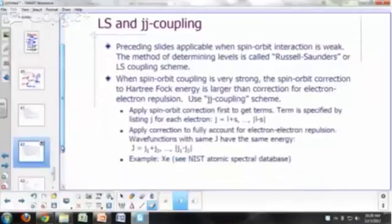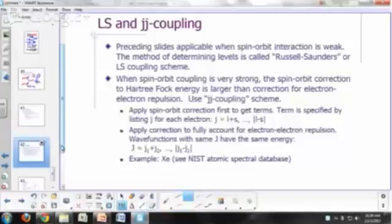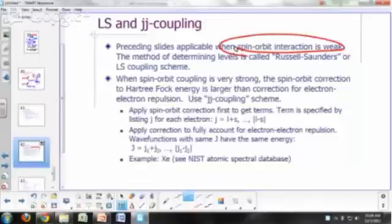The preceding slides that we've been talking about so far are applicable when your spin-orbit interaction is weak. So the method that we were using to determine the level is known as Russell-Saunders or LS coupling scheme.